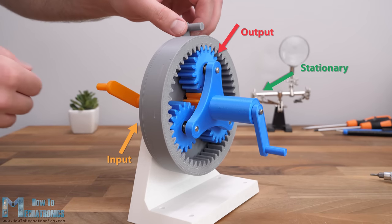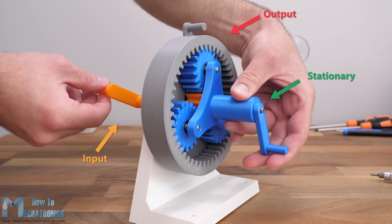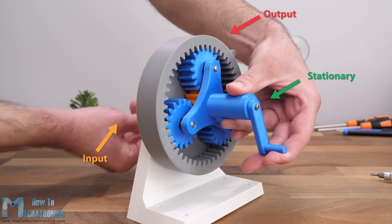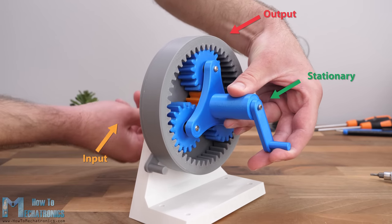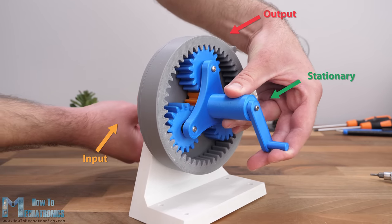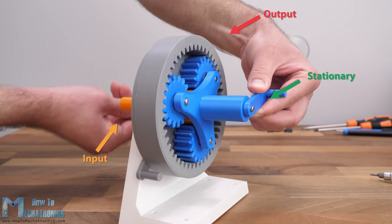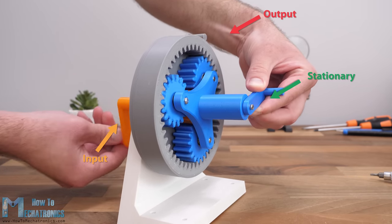For example, we can have the carrier held stationary and use the sun gear as an input. In such a case the output will be the ring gear, which will get different output ratio than in the previous case, or here it will be 4 times slower and in reverse direction. That's a negative 4 to 1 ratio.